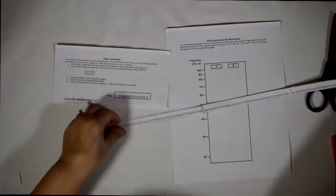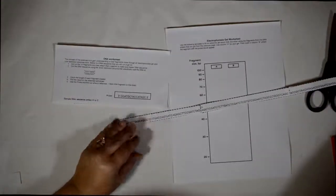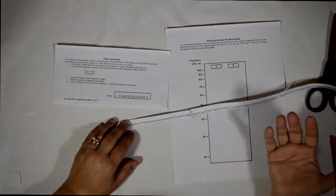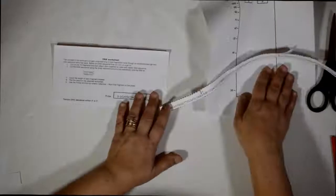That's your master sequence. Now we're going to cut that DNA using the SMA one, which is the restriction enzyme.